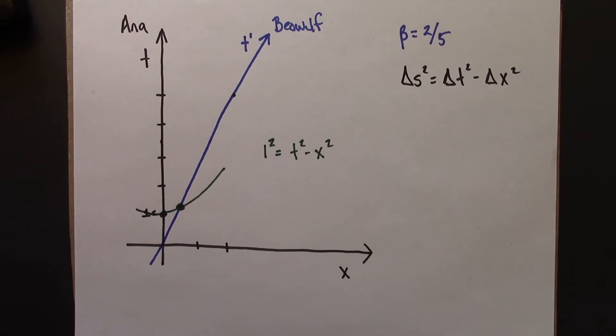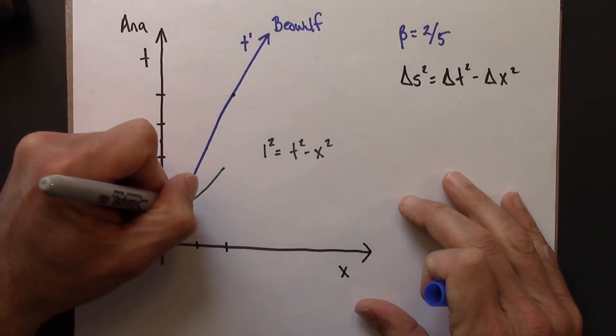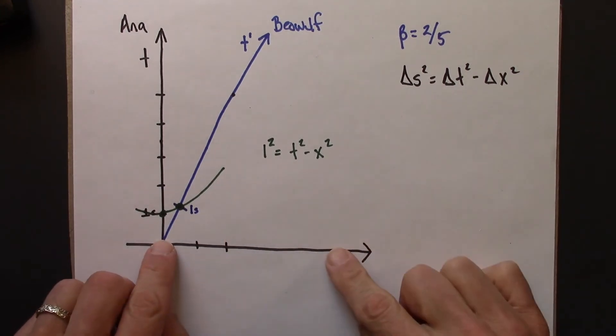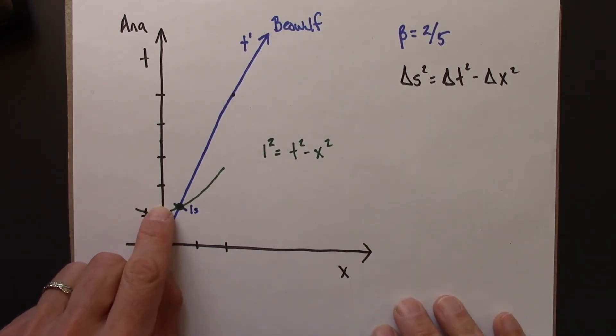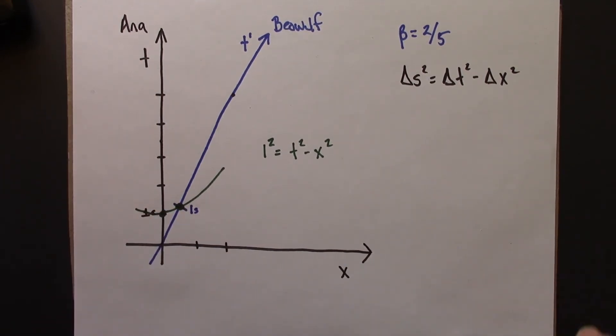So let me draw on here that this is 1 second according to Beowulf. So notice that Ana is going to read a larger time, like when this second green event occurs, when Beowulf says 1 second has elapsed, Ana is going to say actually more than 1 second has elapsed. Wait, they're not agreeing on time.